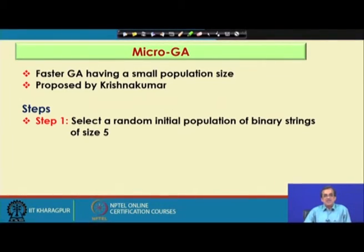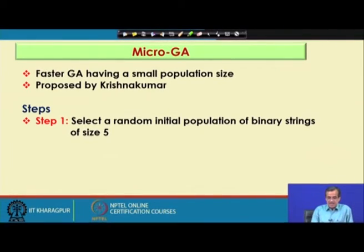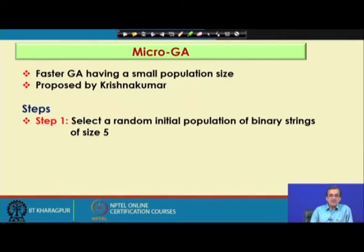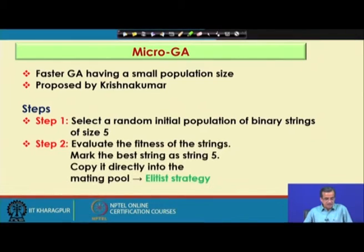This is basically a binary-coded GA with a little bit of modification. Step 1: we select a random initial population of binary strings of size 5. As I mentioned, we start with a population size N equals 5, which is an odd number — either 5, 7, or 9; generally we do not go more than 9 in micro GA. Step 2: we evaluate the fitness of all 5 GA strings lying in the population, which are initially selected at random.